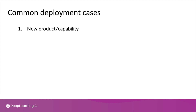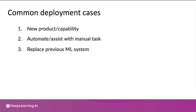In this case, a common design pattern is to start with a small amount of traffic and then gradually ramp it up. A second common deployment use case is if there's something already being done by a person, but you'd now like to use a learning algorithm to automate or assist with that task — for example, people inspecting smartphones in a factory. A third case is if you've already been doing this with a previous ML system but want to replace it with a better one.